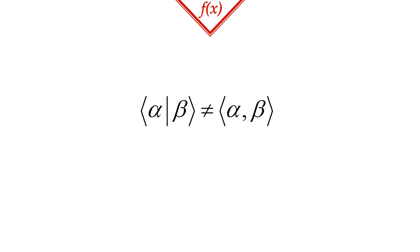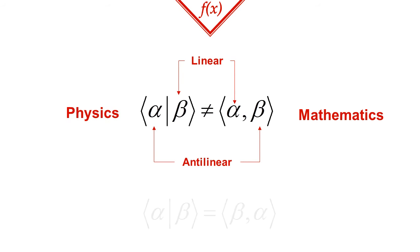Note that this representation introduces a slight difference in convention. While mathematicians consider the inner product to be linear in the first and anti-linear in the second argument, in the bracket notation it's the other way around. The inner product is linear in the second, ket argument, and anti-linear in the first, bra argument.